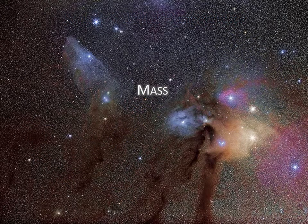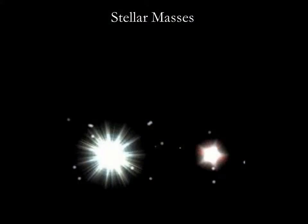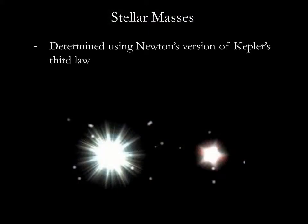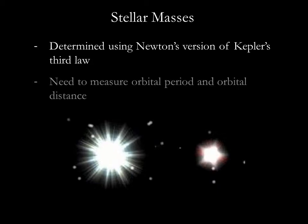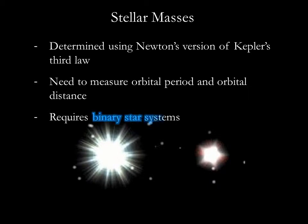Now, onto how we determine stellar mass. Mass is generally more difficult to get at than surface temperature or luminosity. A dependable method for getting at the mass of a star uses Newton's version of Kepler's third law. To use Kepler's third law, we need to measure both the orbital period and the average orbital distance. For stars, this means we can measure masses only in binary star systems.